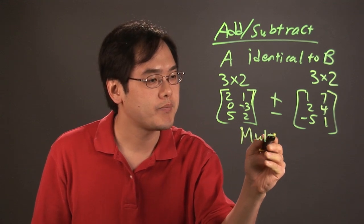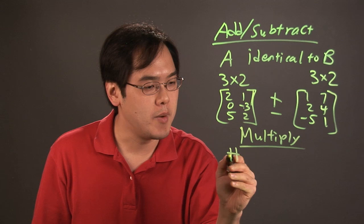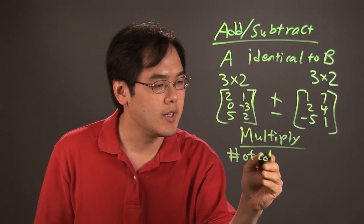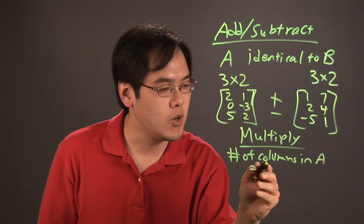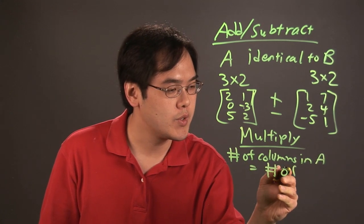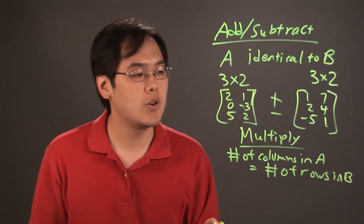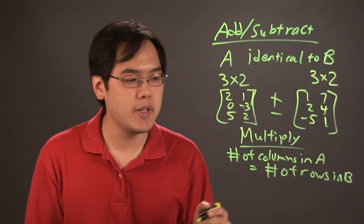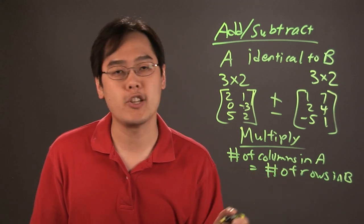When it comes to multiplying, what you want to consider is the number of columns in A has to equal the number of rows in B. There's a little bit more flexibility, but you have to ensure that the number of columns in A matches the number of rows in B.